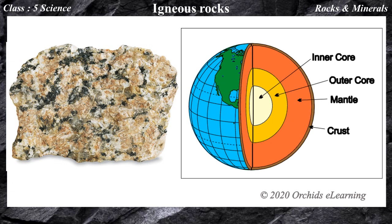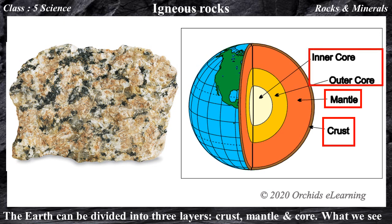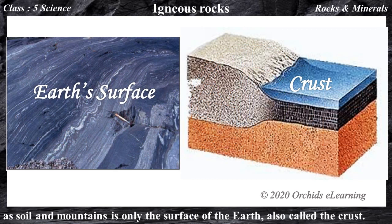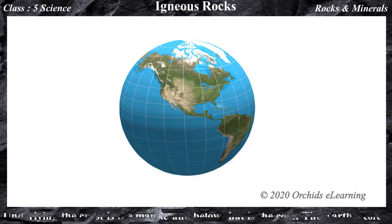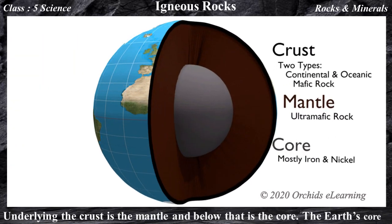The earth can be divided into three layers: crust, mantle, and core. What we see as soil and mountains are only the surface of the earth, also called the crust. Underlying the crust is the mantle, and below that is the core.